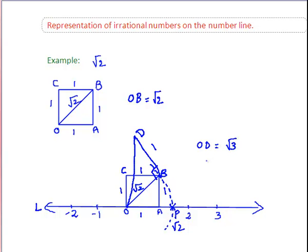This is obtained as follows. By Pythagoras theorem, we have OD square is equal to OB square plus BD square.